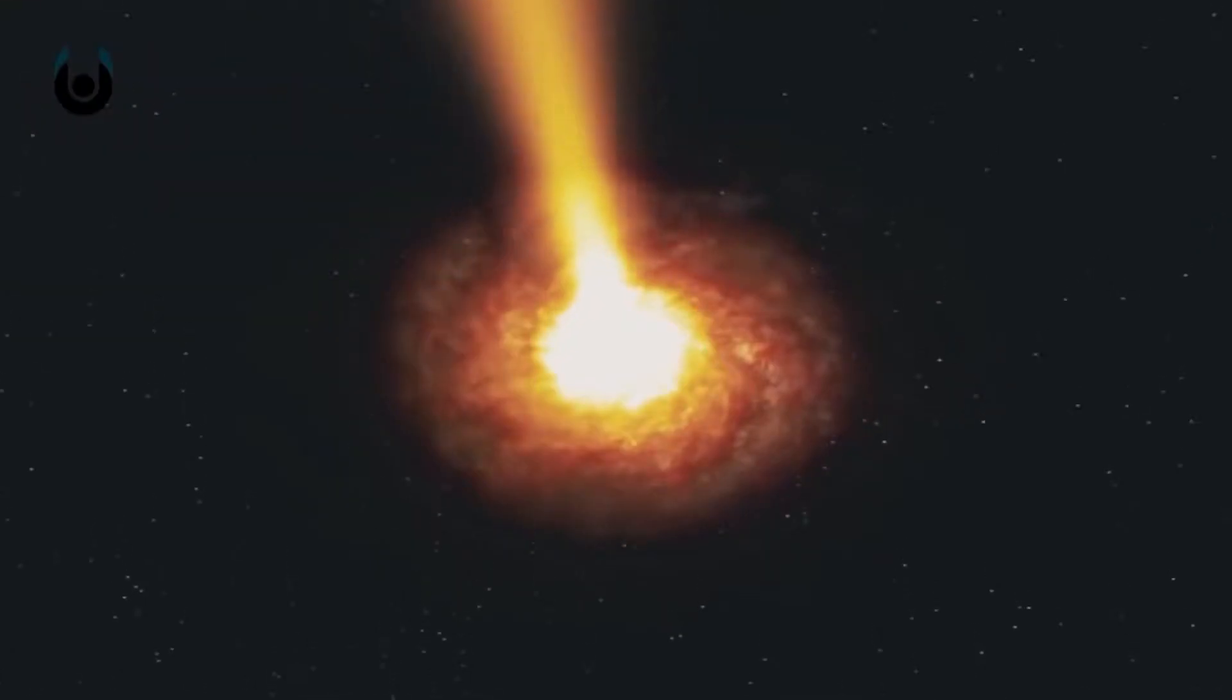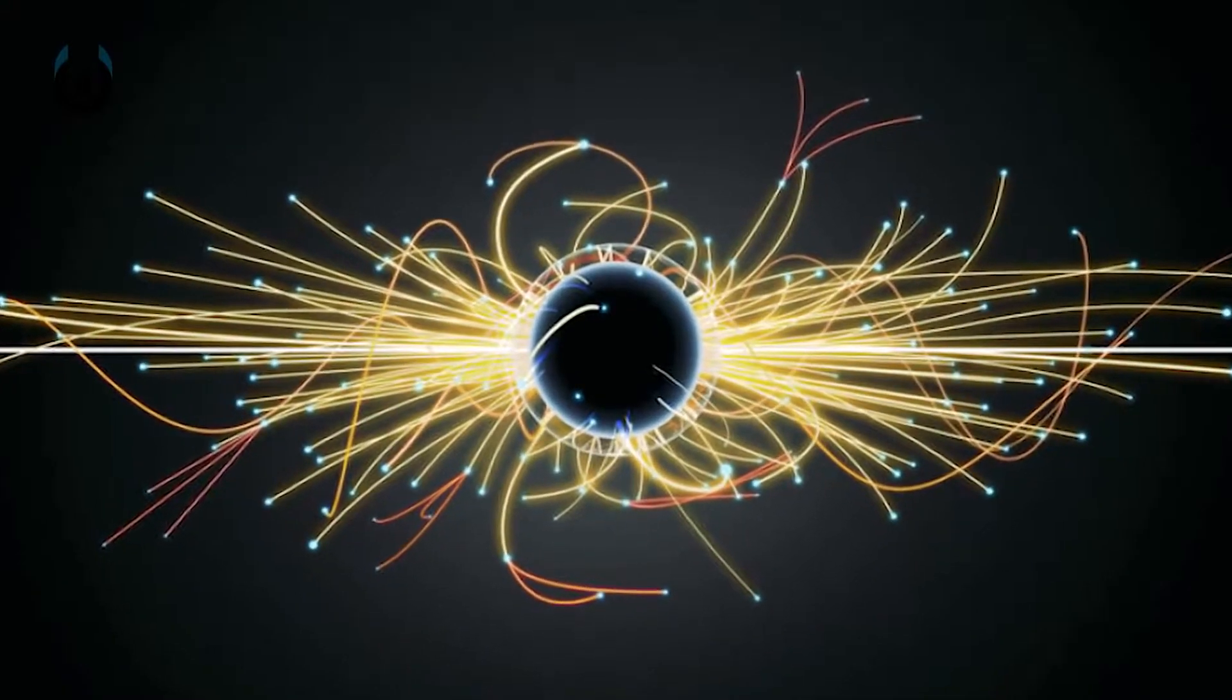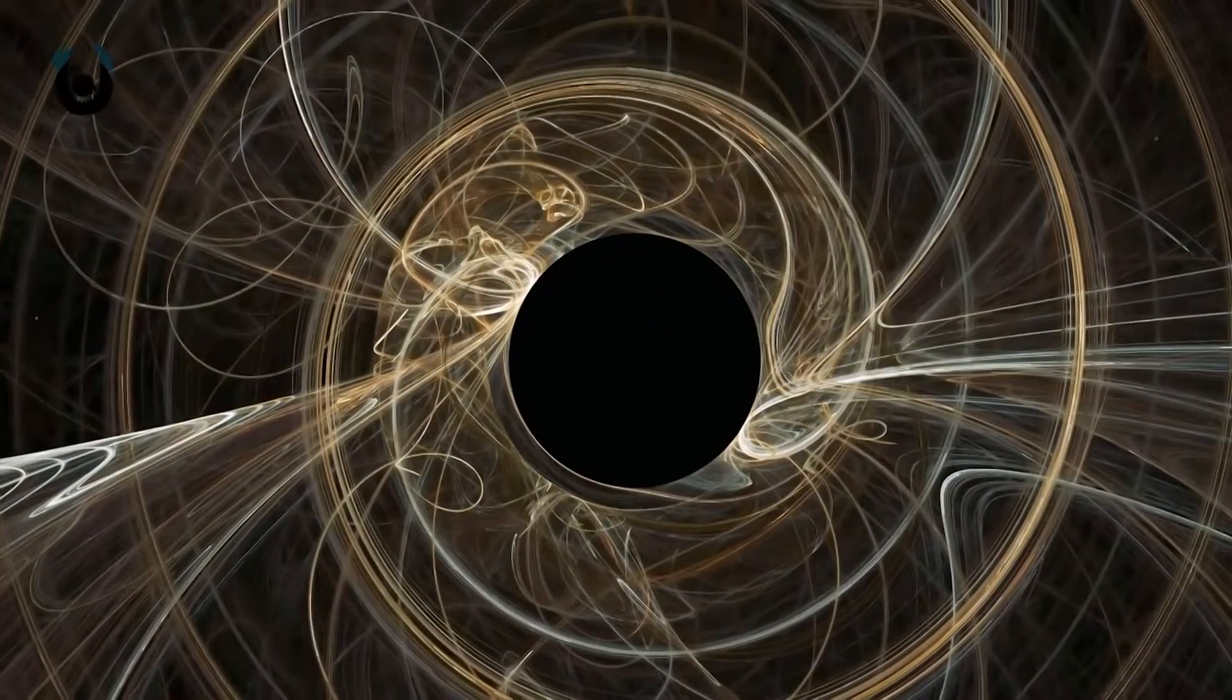Because of this, black holes that do not gain mass through other means are expected to shrink and ultimately vanish. What it means is that if the black hole has nothing to eat, it eventually evaporates. The energy and mass that the black hole pulled inside of itself evaporates back out into space in the form of radiation.